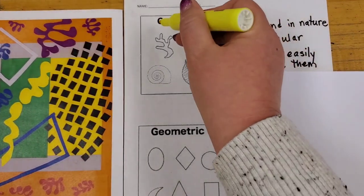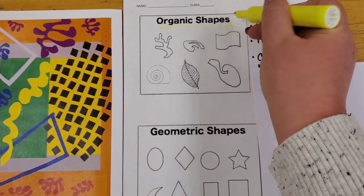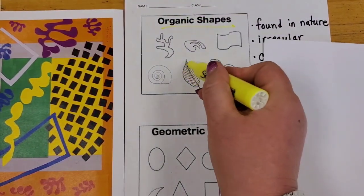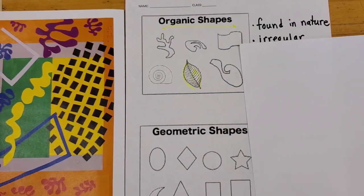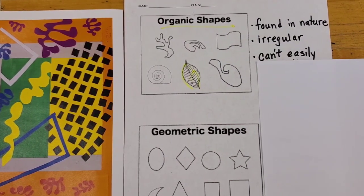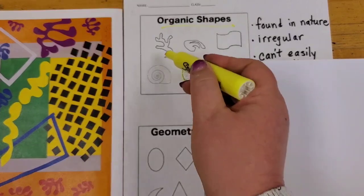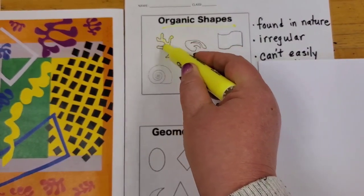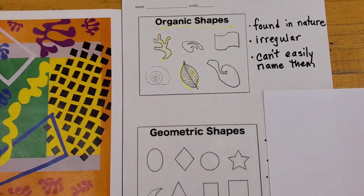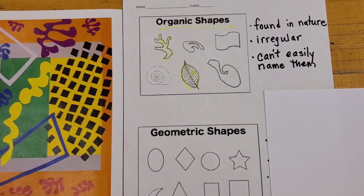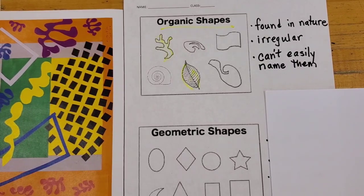So if I were to look at these organic shapes, this leaf shape for example is a shape that I would find in nature. This maybe looks like a piece of coral or something you would find under the sea. Again because of all the curves and the twists and because we find it in nature, those are organic shapes.